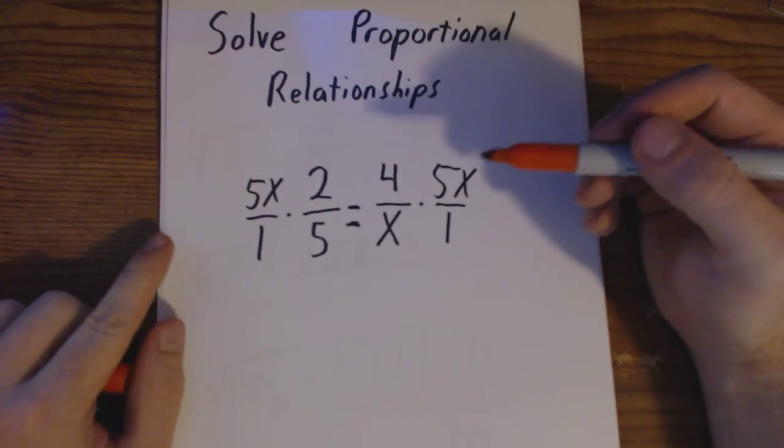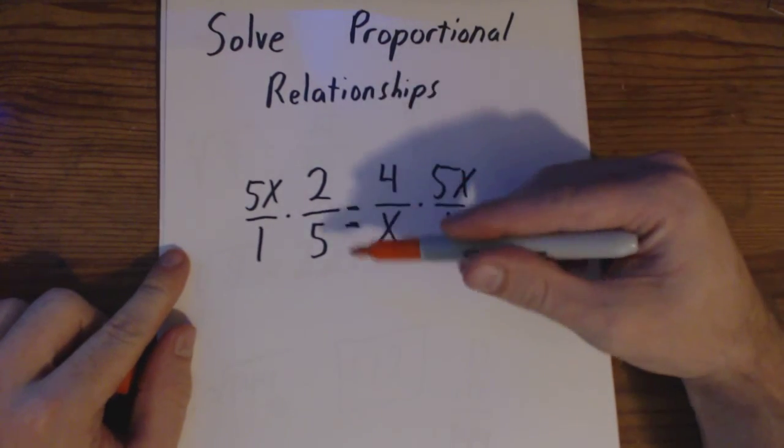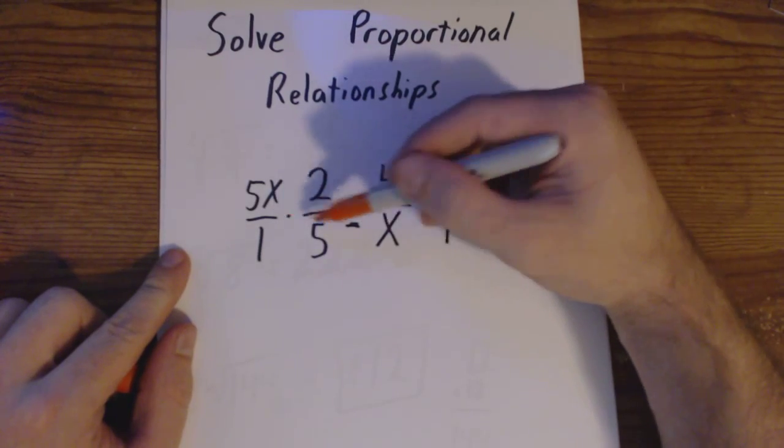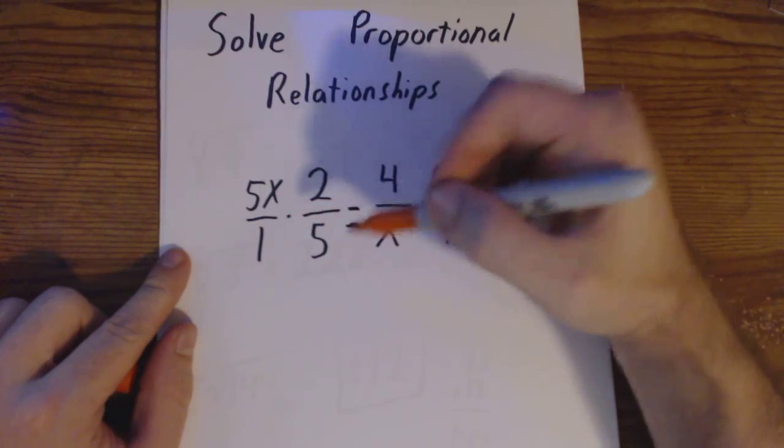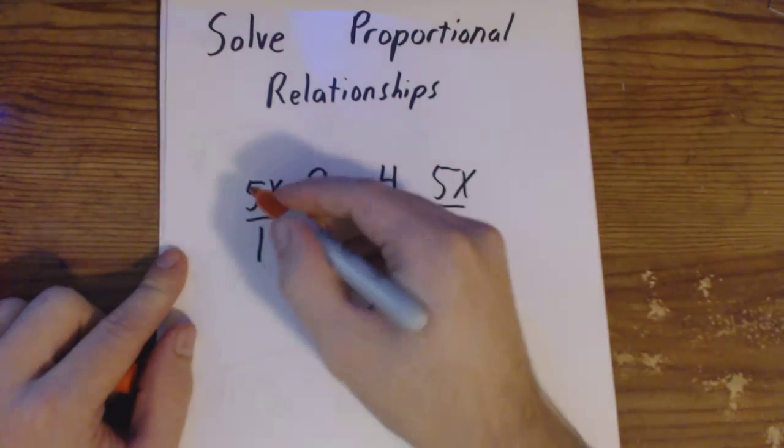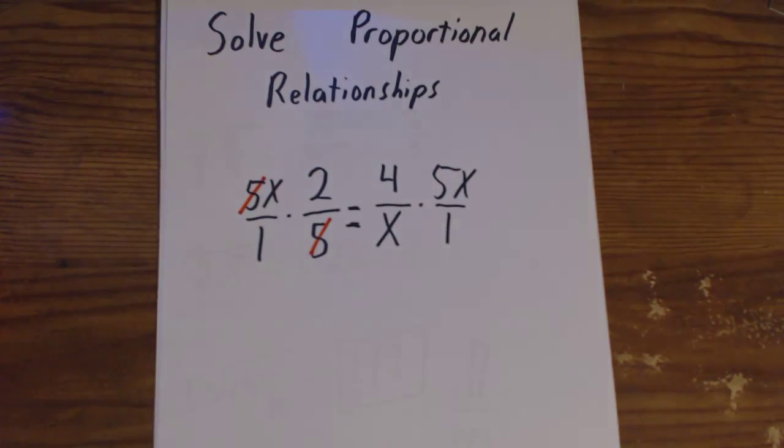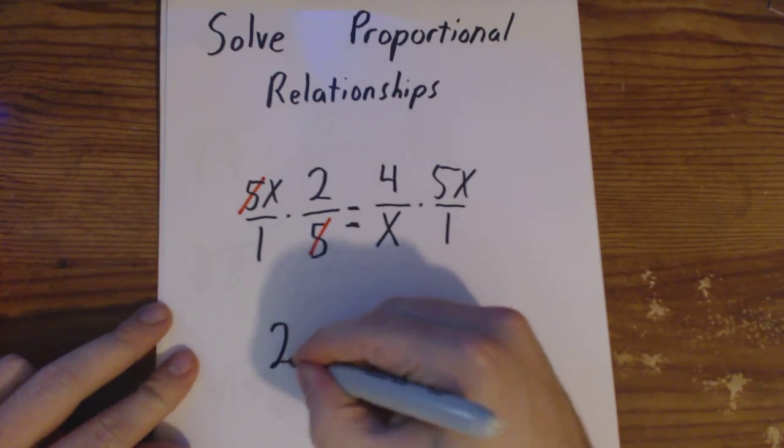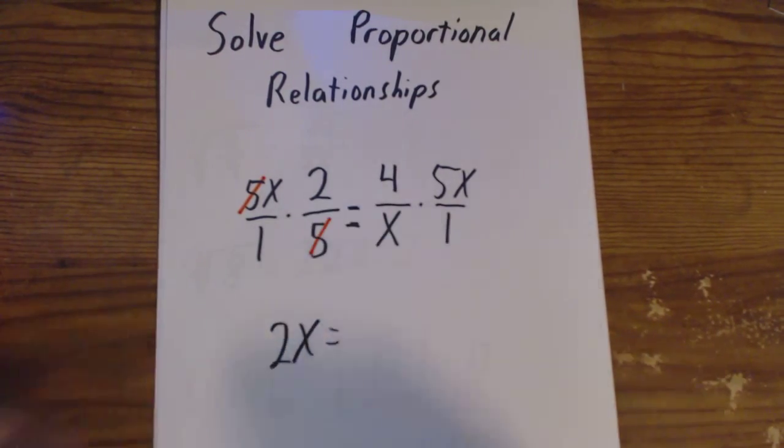Now we learned previously when you're multiplying two fractions, you can cross cancel. In this case, 5 and a 5. All I'm going to have left on this side is 2 times x, 2 times x equals.